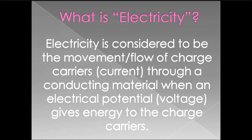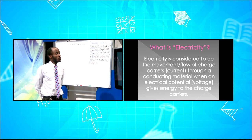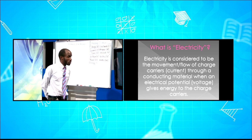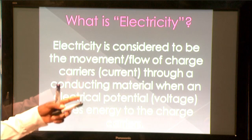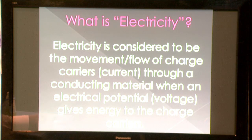The question may be asked once or twice in your life, or you yourself may have asked: what is electricity? Electricity is considered to be the movement or flow of charge carriers — which is a current — through a conducting material when an electric potential or voltage gives energy to the charge carriers. Without the charge carriers moving, there is no current and you can't get electricity.